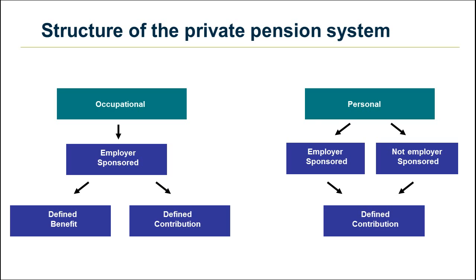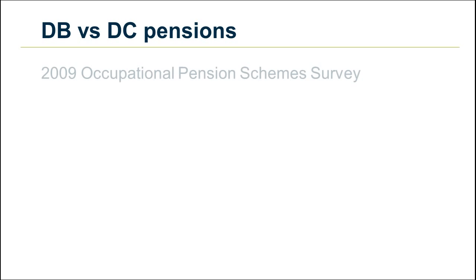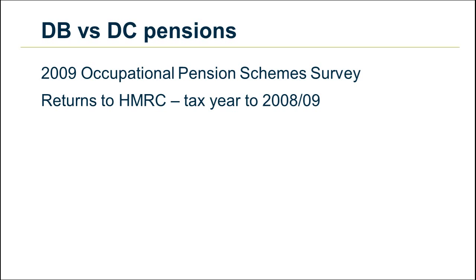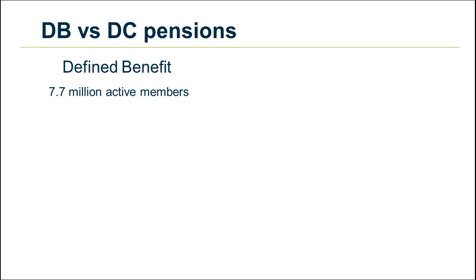All personal pensions are defined contribution. The latest official estimates on the number of people contributing to private pensions are from the 2009 Occupational Pension Scheme Survey and returns to HM Revenue and Customs for the tax year 2008-2009. Looking at defined benefit schemes, we see that there were 7.7 million active members.